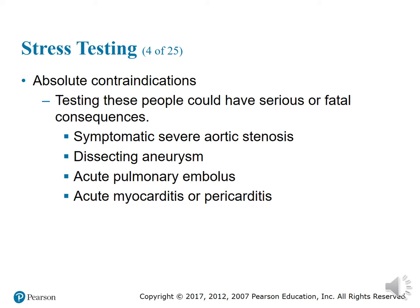Testing some people could have serious or fatal consequences. Absolute contraindications include symptomatic severe aortic stenosis, dissecting aneurysm, acute pulmonary embolism, and acute myocarditis or pericarditis. An acute MI, as discussed in chapters 13 or 14, means the heart is too weak — performing a stress test can stress the heart out even more, causing the affected area of the heart to extend.